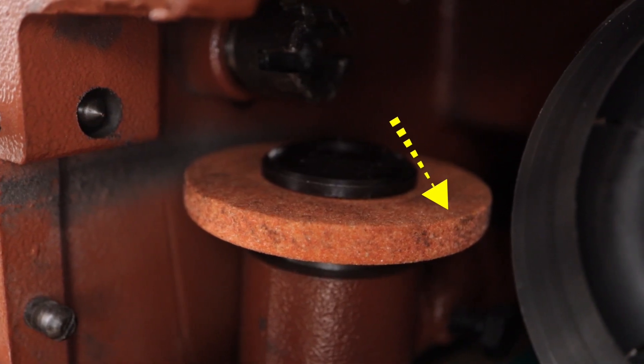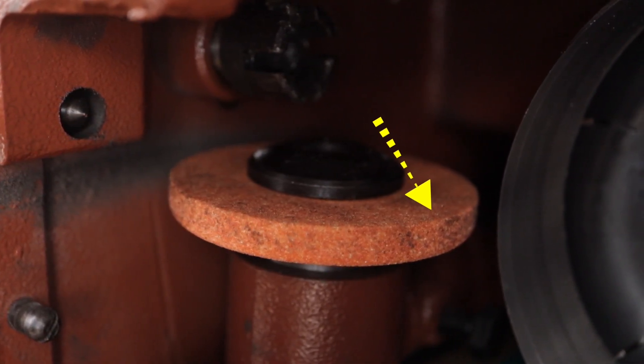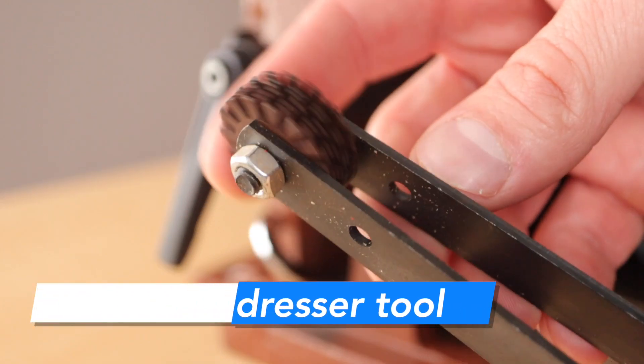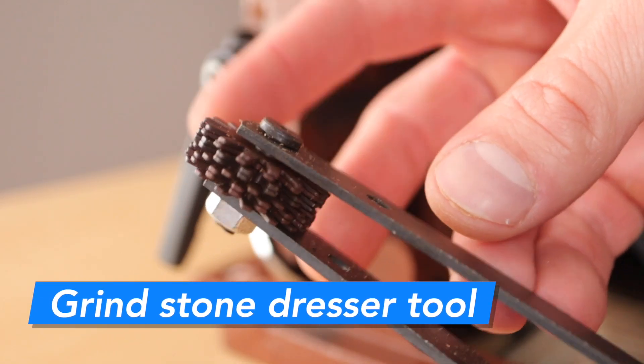When inspecting the sharpening stone you can see some dirt buildup on it, so we are going to give this a quick cleaning. This grindstone dresser tool is what we will be using to clean with.